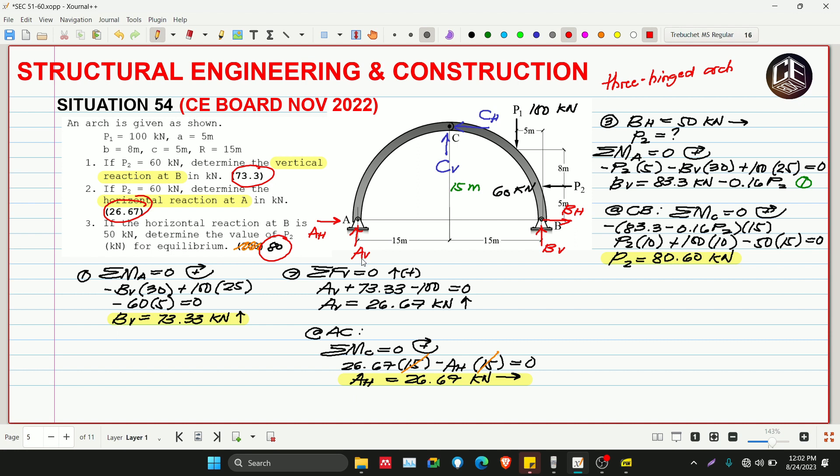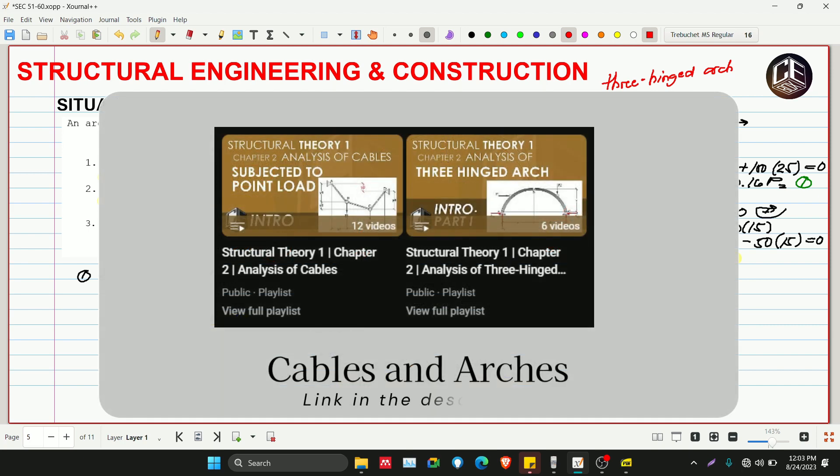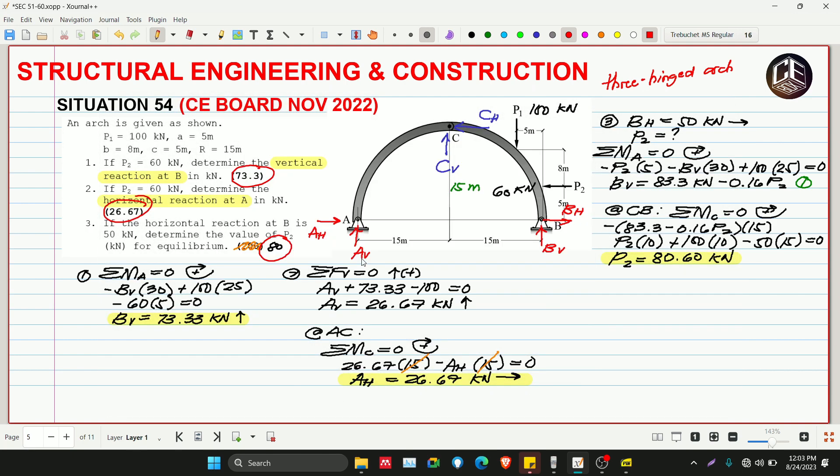Our situation number 54 is very simple because we know it's a 3-hinge arch. The simple solution is to isolate the structure member by member, then apply simple statics of rigid bodies or equilibrium conditions. If you want a detailed discussion for cables and arches, you may visit our playlist on cables and analysis of arches under structural theory, chapter 2 I think. The link to these playlists is in the video description, so visit them to learn the topic in deeper detail. We hope you learned a lot and enjoyed this video tutorial. Please subscribe and hit the bell icon for notifications and updates. Thank you for watching, God bless everyone, and bye bye.